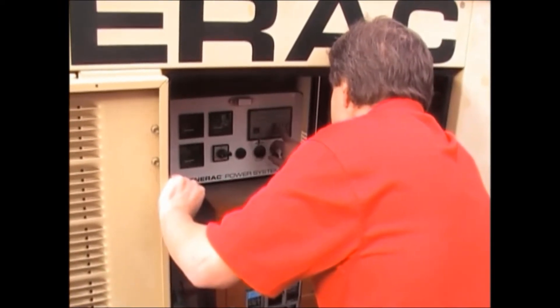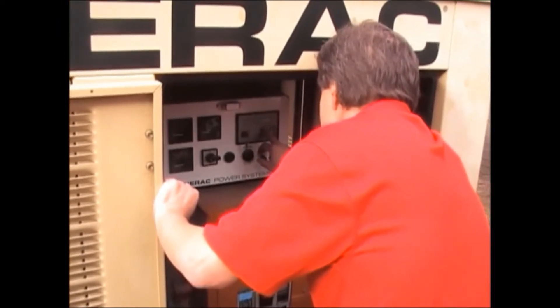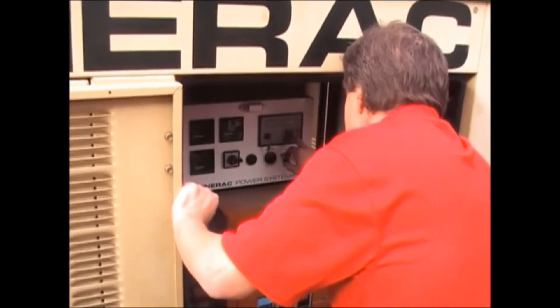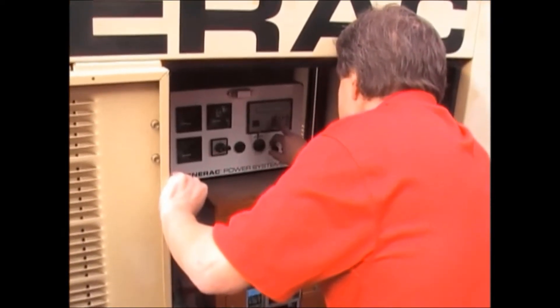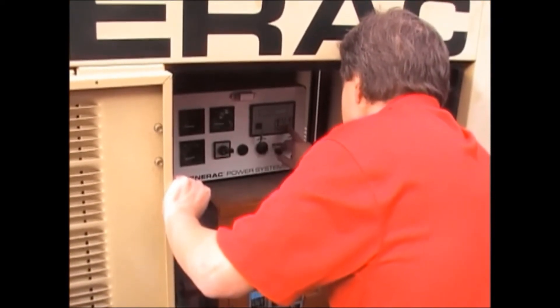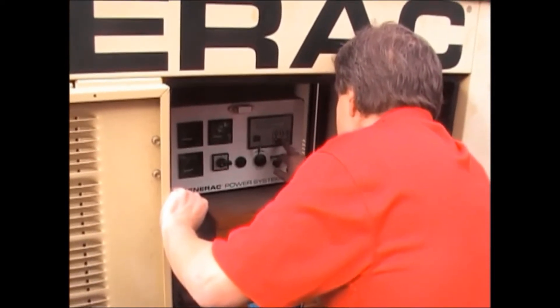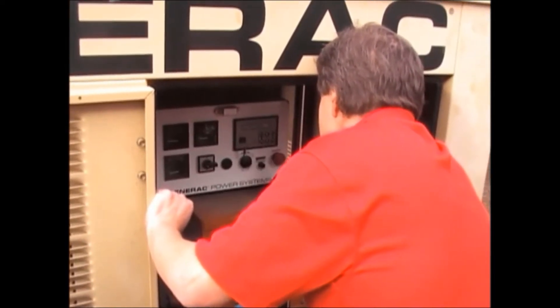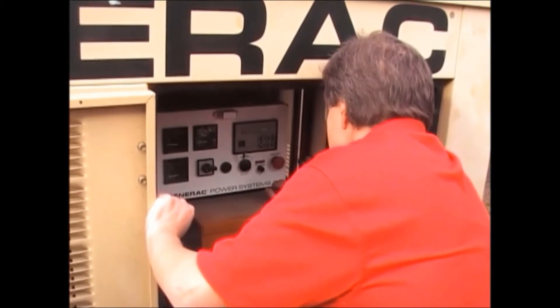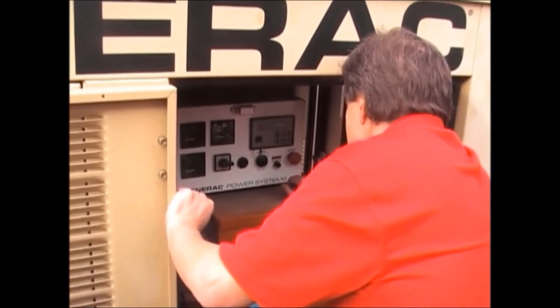Basically, we're going to assign a function to the first assignable relay, relay number one. We're going to push the up down arrow keys until we come to common alarm in that list and then we'll press enter. That assigns common alarm to relay number one.